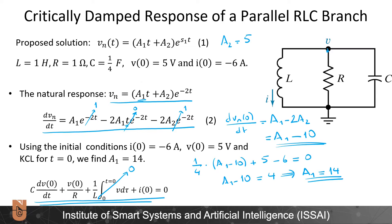By finding A1, I have completed the solution. The natural response of the circuit is V_n(t) equal to (14t + 5) times e to the minus 2t. This is my final solution.